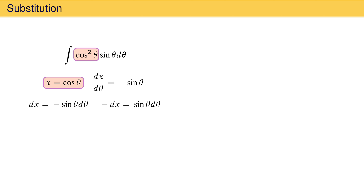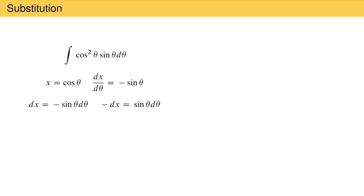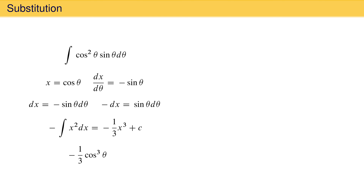We can substitute x for cos theta and negative dx for sin theta d theta, allowing us to write the integral as the integral of negative x squared dx. This is an integral we know how to evaluate: it equals negative one-third x cubed plus a constant of integration. Substituting cos theta back in for x gives negative one-third cos cubed theta plus a constant.